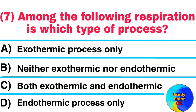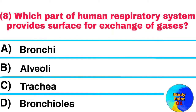Question No. 7. Among the following, respiration is which type of process? Answer: Exothermic process only. Question No. 8. Which part of the human respiratory system provides surface for exchange of gases? Answer: Alveoli.